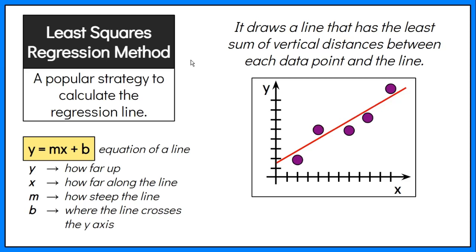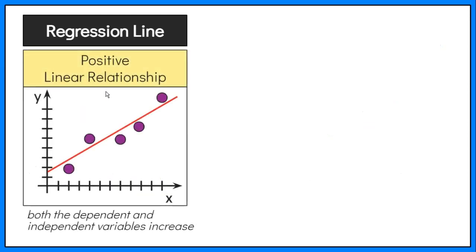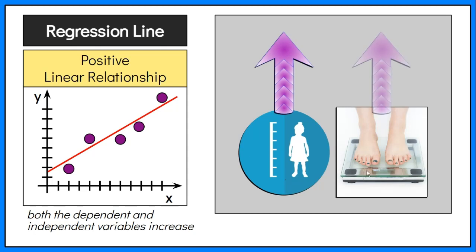The regression line can either show positive or negative linear relationship. The positive linear relationship is when both the dependent and independent variables increase. For example, as height increases, you would expect weight to increase, but not perfectly.